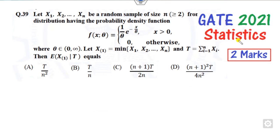Hello everyone, welcome to the next lecture on GATE 2021 Statistics. Question 39 is a two marks question related to order statistics. This is a simple question. What is the logic behind it?